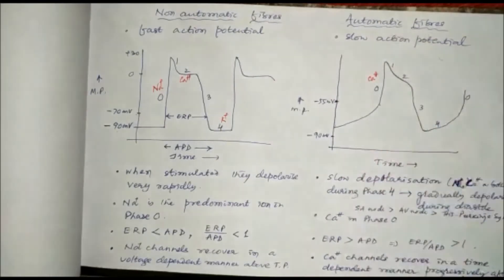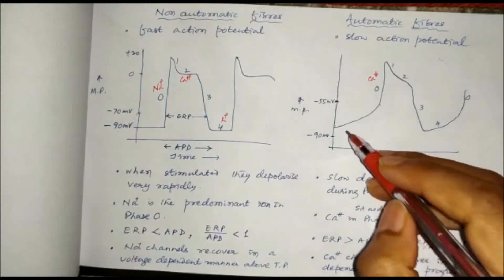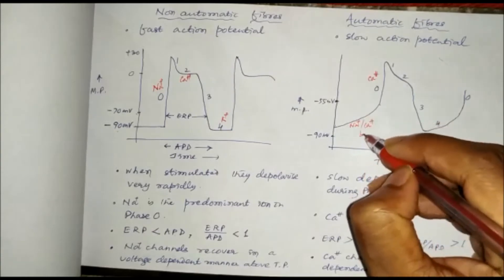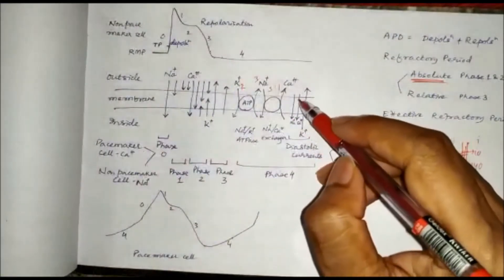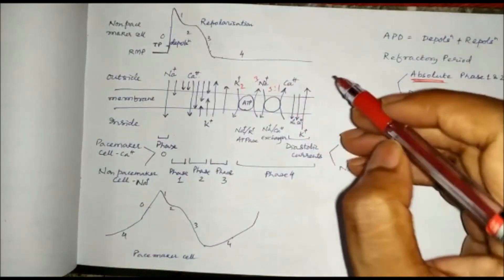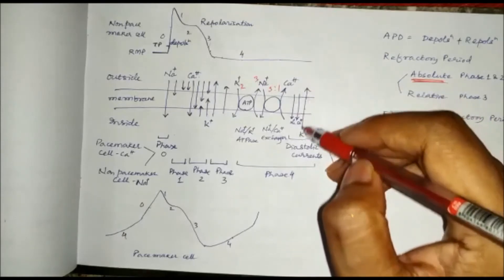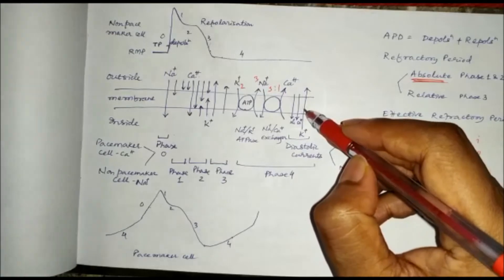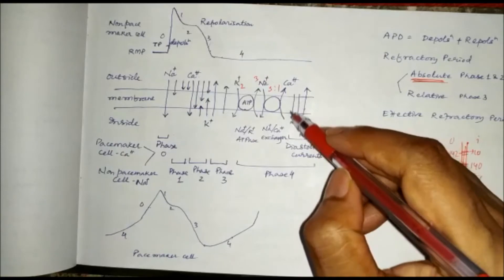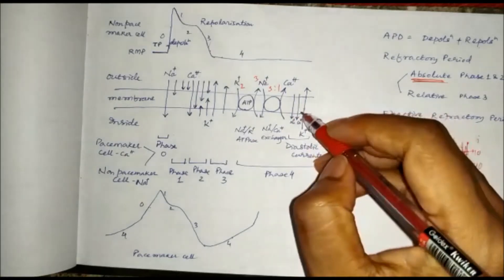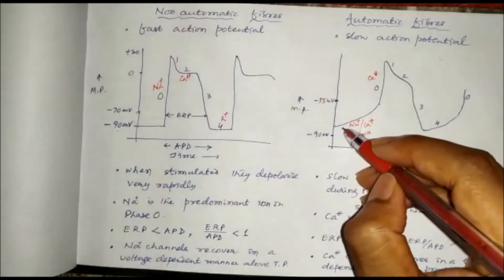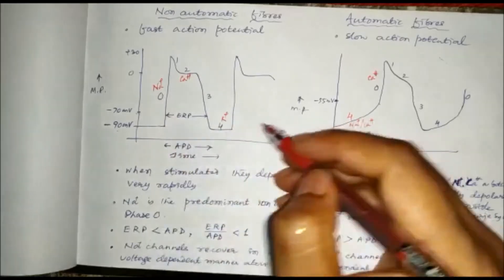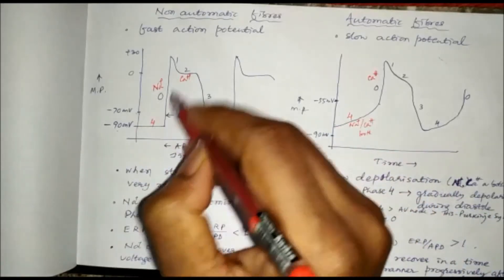In automatic fibers, the resting membrane potential does not remain stable because there is a gradual slow depolarization during diastole. This slow depolarization is caused by leakage channels for sodium or calcium or both in automatic fibers. In non-automatic fibers, the major leakage channel is potassium. These act as diastolic currents. Potassium in non-automatic fibers maintains the resting membrane potential, whereas sodium and calcium in automatic fibers cause slow depolarization in phase four. Phases are: phase zero, one, two, three, and four.